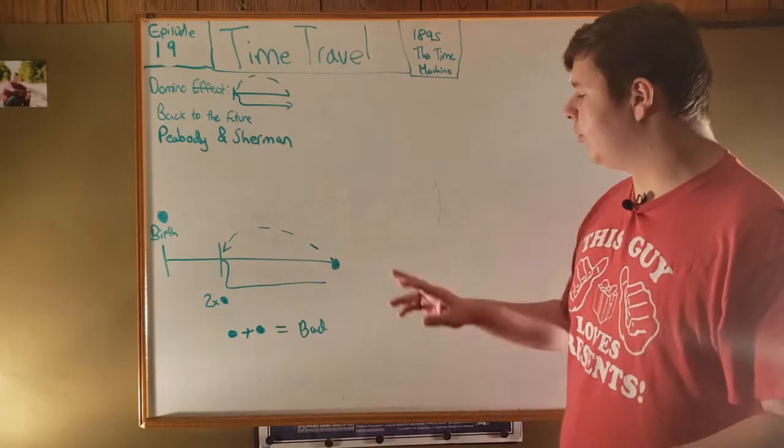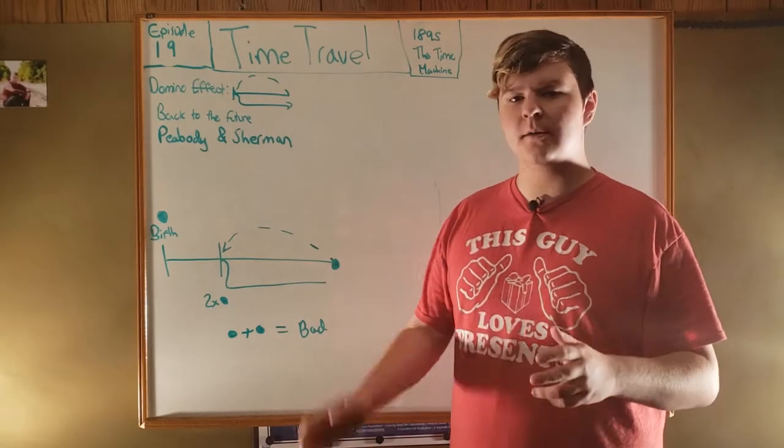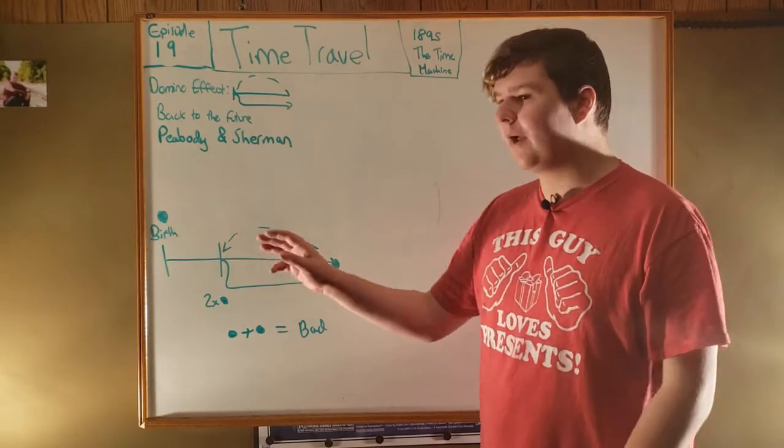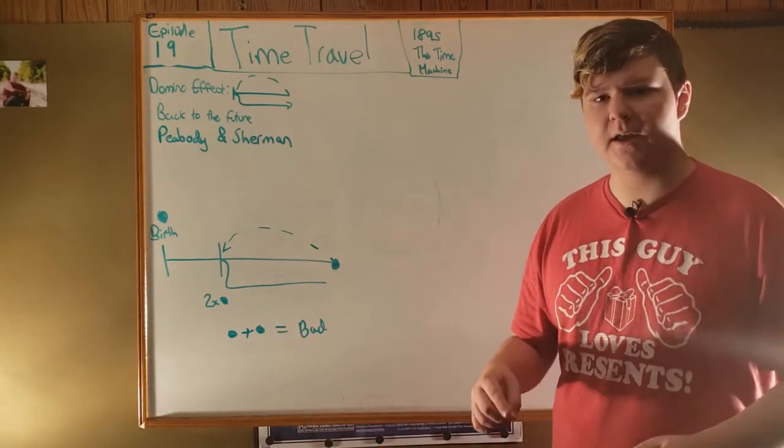In Mr. Peabody and Sherman, when they go back in time to a time after their own birth, there becomes two of them, or if they go back in time to a point where they've already gone back in time.